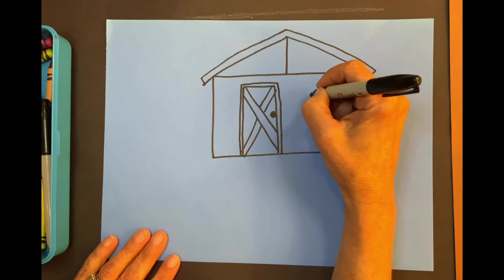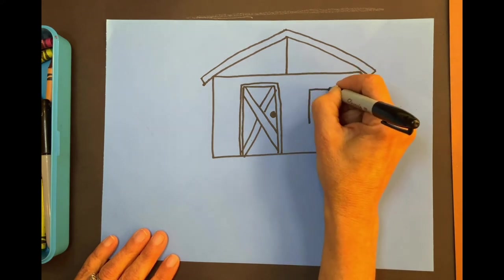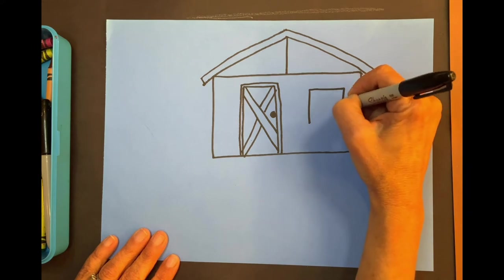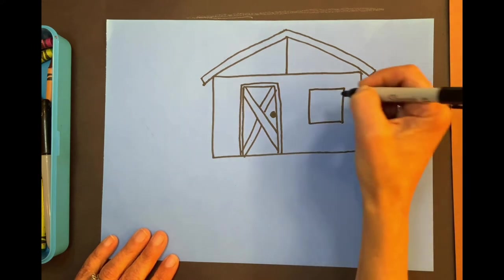I'm going to make my window first, okay? So we know where to put that. Mine's going to be a square. Yours might be a rectangle. Can you put a window in the empty space that you have? And then we'll make the walls.